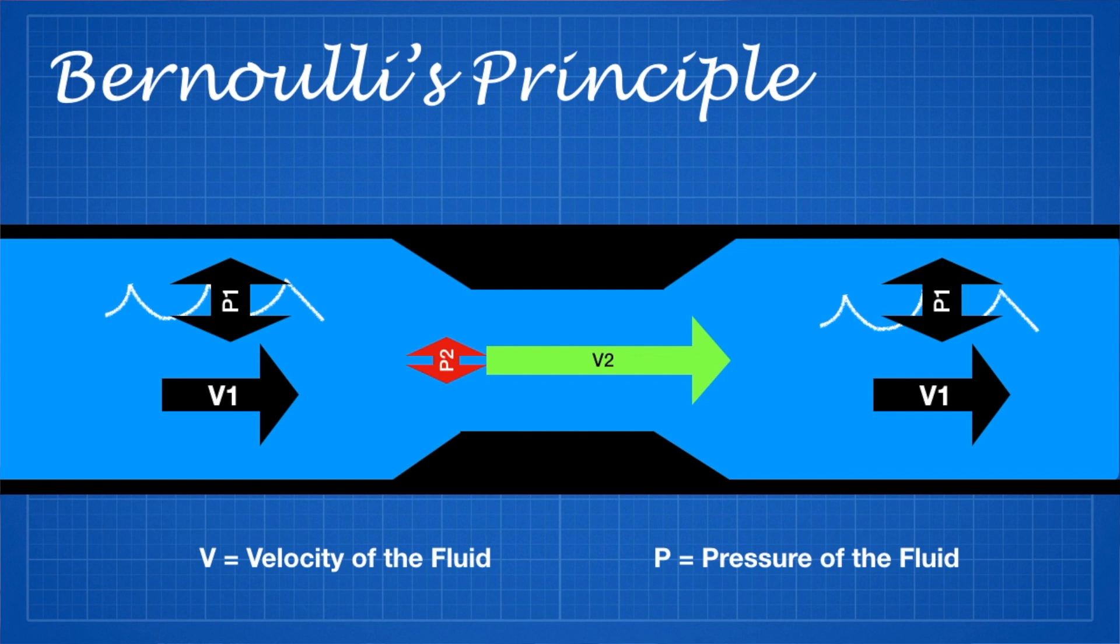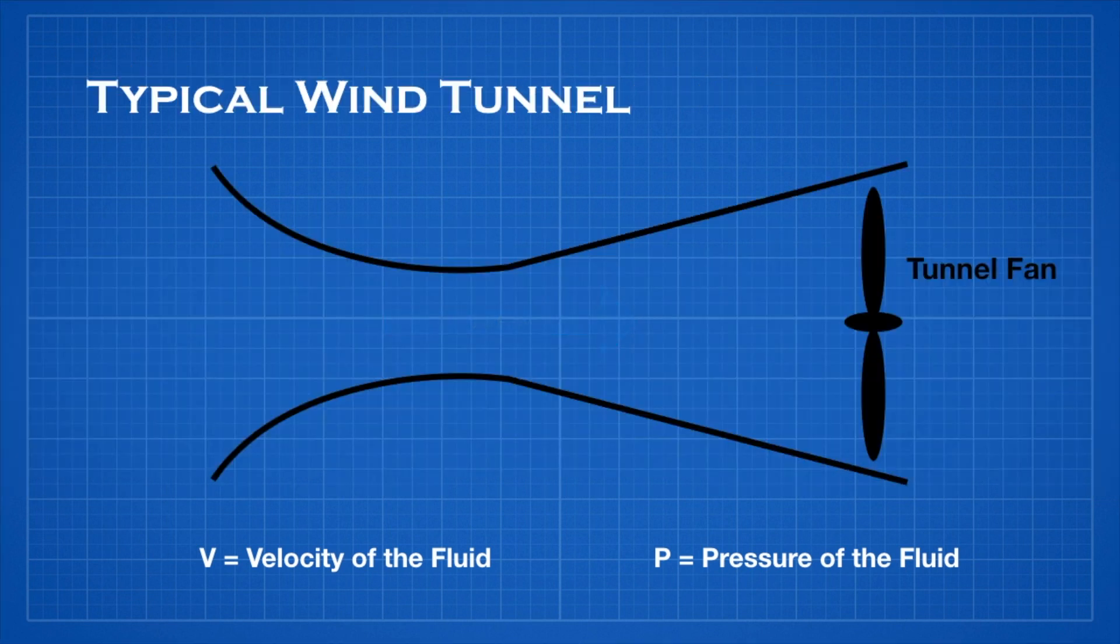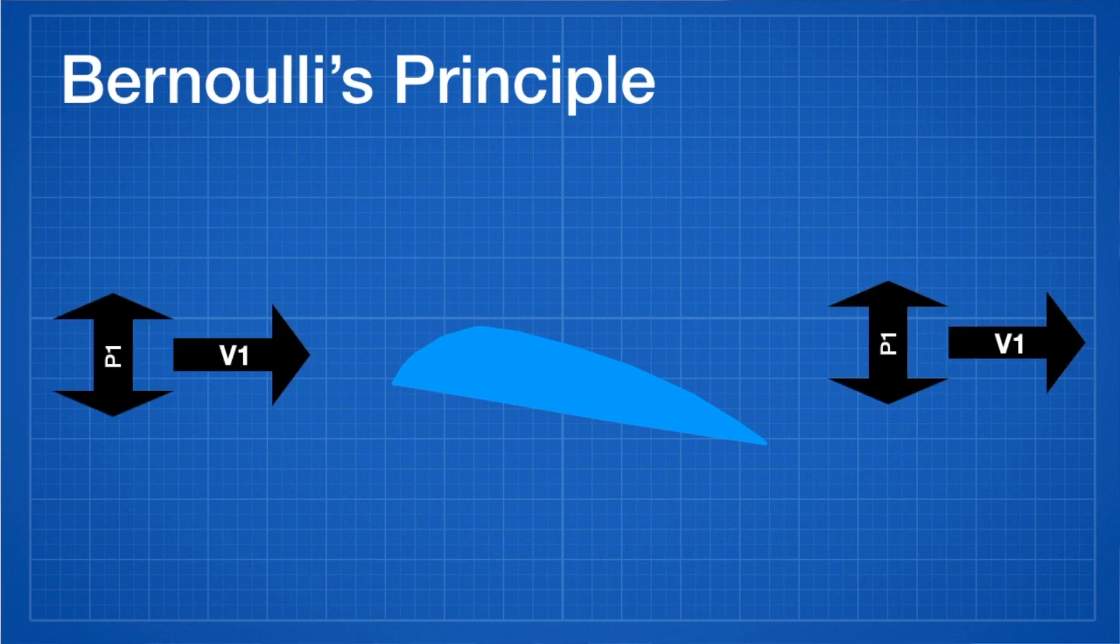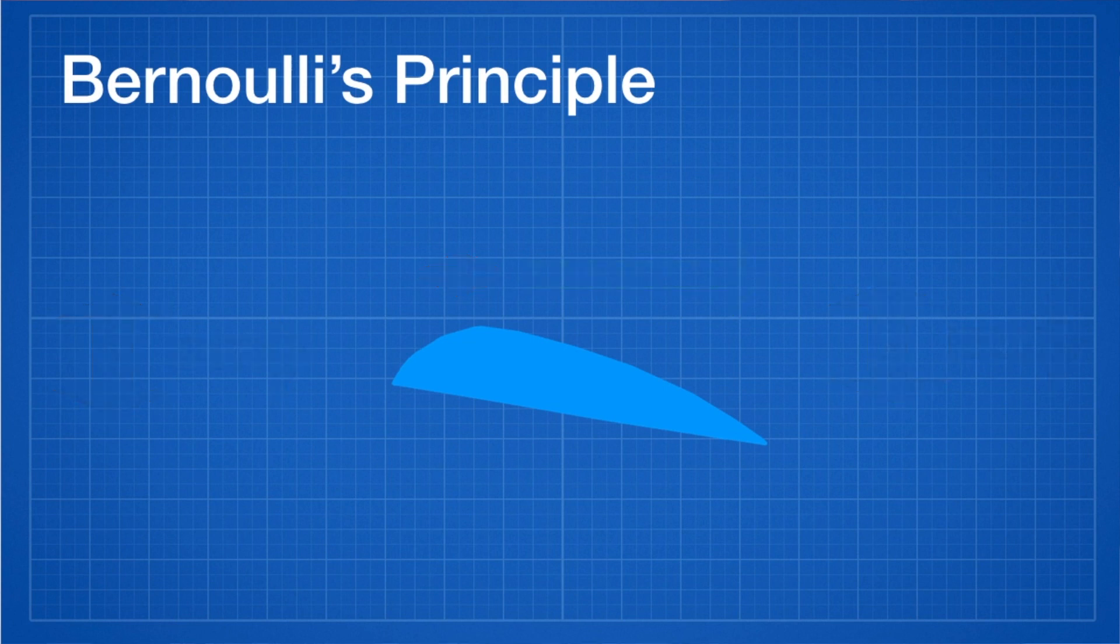This principle is directly connected to how we study aerodynamics in wind tunnels today. As the area of the wind tunnel decreases, the velocity of the air increases. This is also how aircraft produce lift using Bernoulli's principle. If the wing displaces the air, it causes its velocity to increase, and the resulting force is a net decrease in pressure.